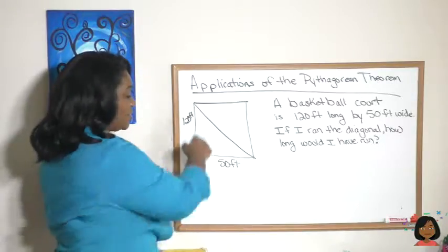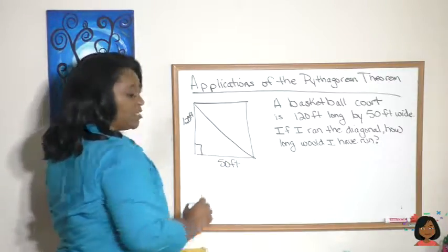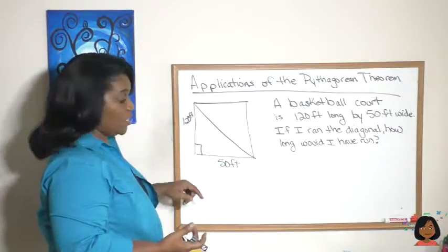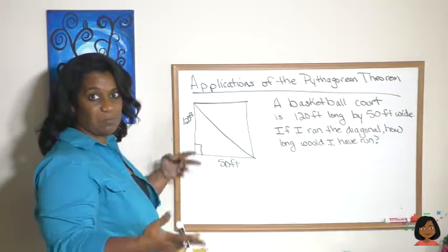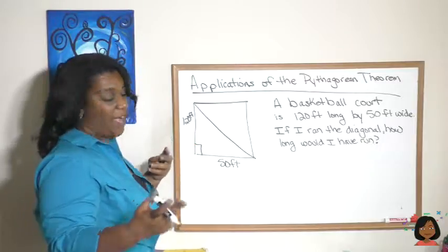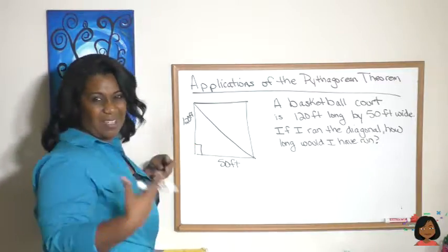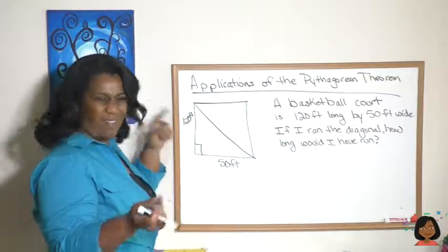Well, we take those dimensions and put them onto our board, draw it out. We can see that our bottom is going to be 50 feet and our length is going to be 120. And if we draw in the diagonals and it's a basketball court, we can assume this is a right triangle because it's going to be a rectangle. So we've got our a squared plus b squared equals c squared.